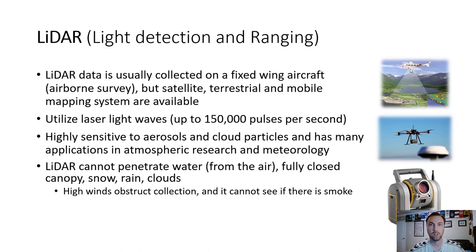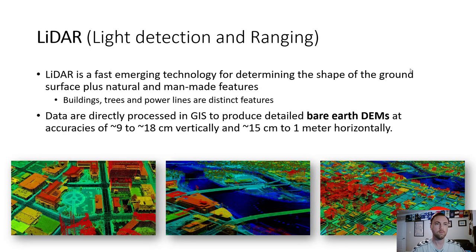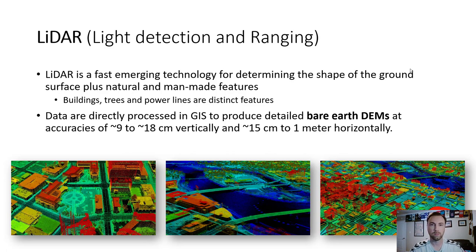LiDAR cannot penetrate water from the air, and fully closed canopies, snow, rain, clouds, and water all present obstructions to LiDAR data collection. High winds also obstruct collection and smoke blocks the sensor. There is something known as an IMU which can control for high winds and turbulence, but ultimately there are limitations. LiDAR is a fast-emerging technology for determining the shape of the ground surface plus natural and man-made features such as buildings, trees, and power lines.